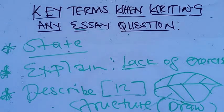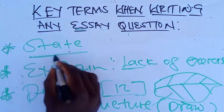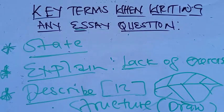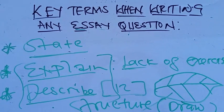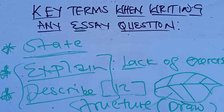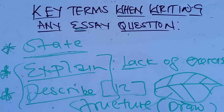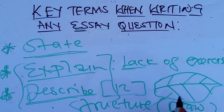These are the three key terms you need to pay particular attention to. If you've been asked to state, do not explain. If you've been asked to explain, do not just state. When explaining and describing, you need to write in paragraph form, not in point form as if you are stating. If you've been asked to state, state in point form. If you've been asked to explain or describe, give it in paragraph form. And if you can remember the structure of what you've been asked to describe, make sure you include it to increase your chances of getting full marks.